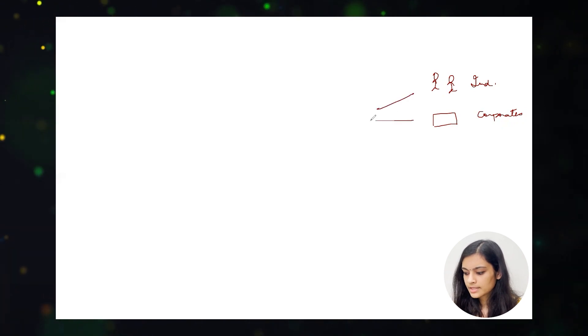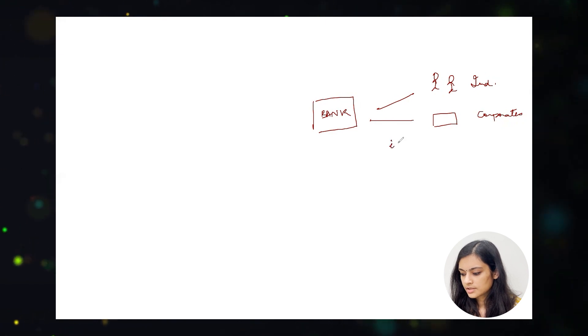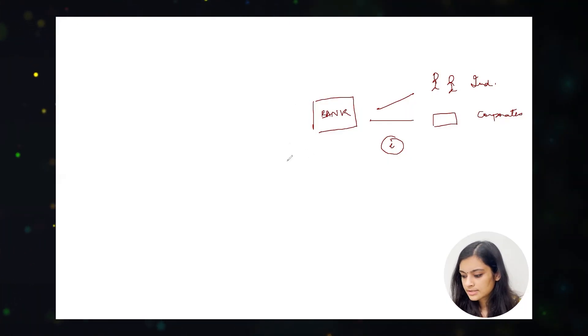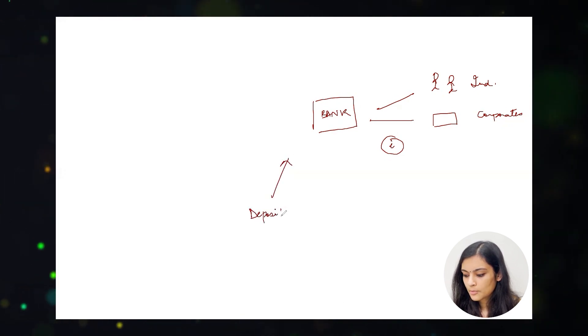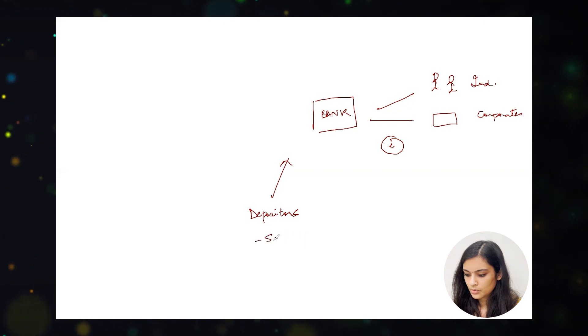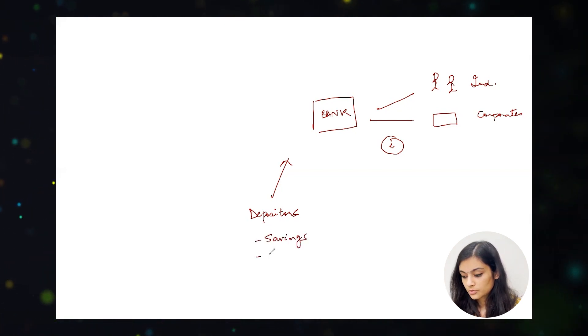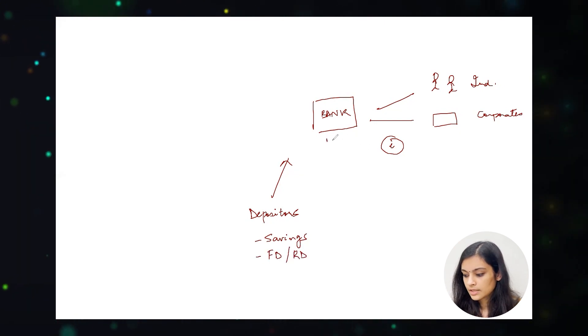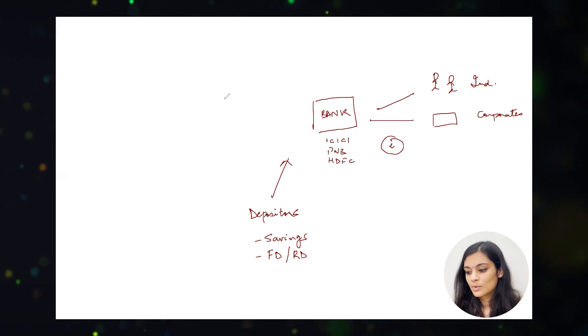But where do they borrow this money from? Most likely they will be borrowing from a bank. When a bank gives out loans to individuals and corporates, they charge an interest rate — as simple as that. But where do banks get the money to lend out? Banks can borrow from two sources. First are depositors — people like you and I who have a savings account in a bank. The money left in savings accounts is not left idle; banks use it to lend out. Depositors could also be people who have an FD or RD with a bank — commercial banks like ICICI, PNB, HDFC, and many others.